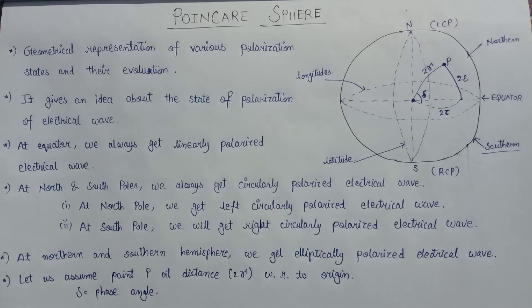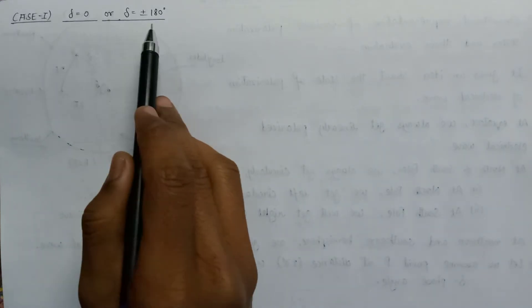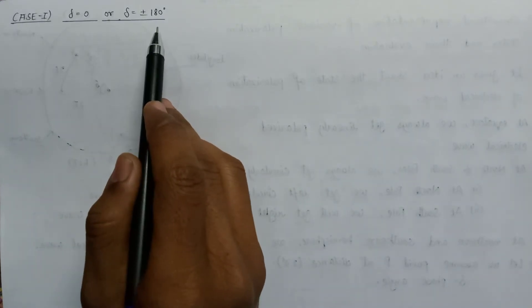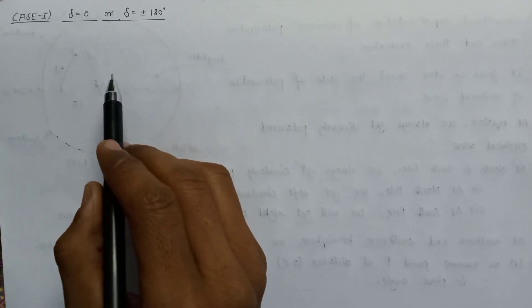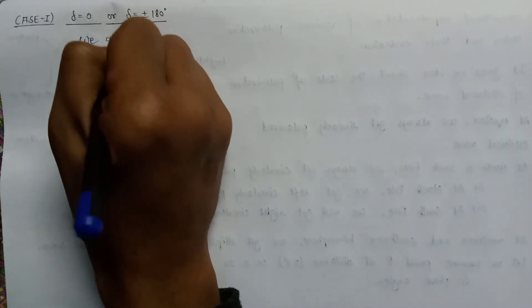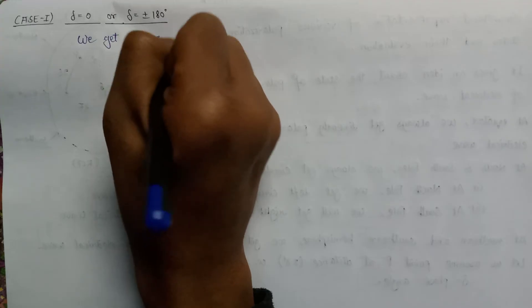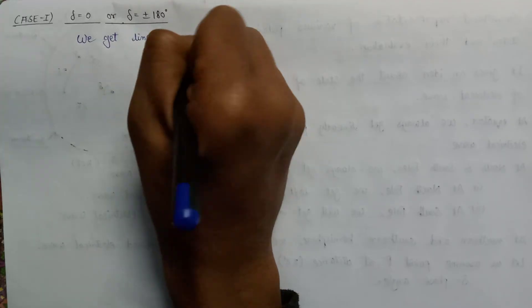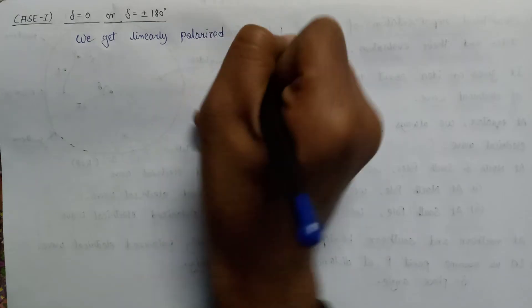Let us discuss the polarization states based on the value of the phase angle δ, since on different values of δ the polarization states differ on the Poincaré Sphere. Case 1: if the value of δ equals zero or equals ±180°, then we will always get a linearly polarized electrical wave.